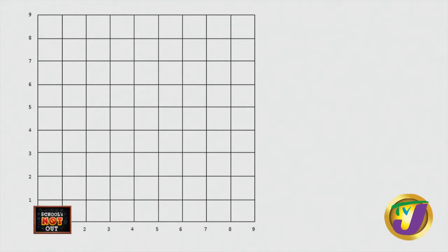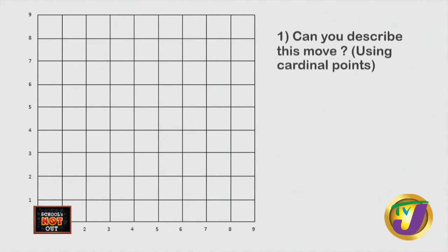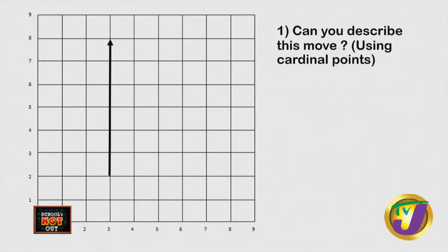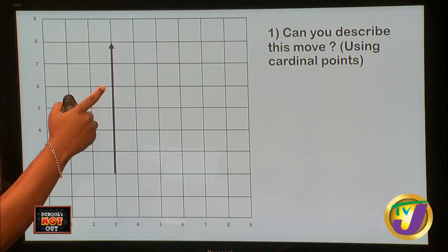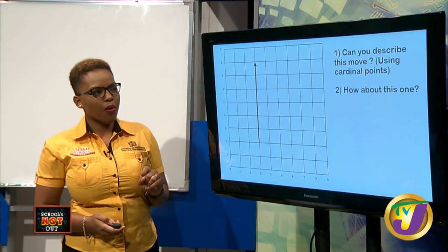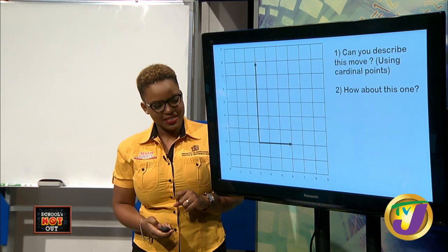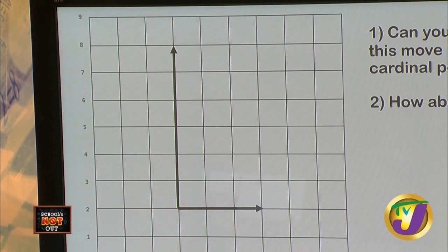All right, I think I can do that. Can you describe this movement using cardinal points? Yes, that looks like six units north. So from here to here would be one, two, three, four, five, six — six units north. How about this one? That looks like three units east.